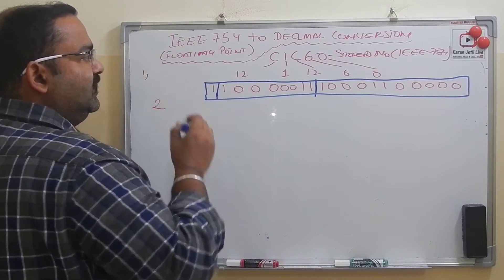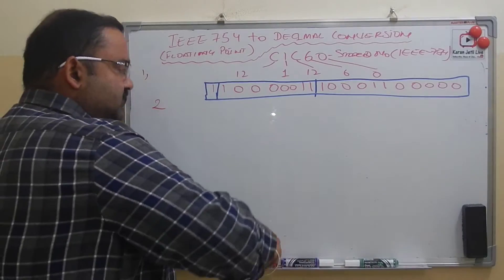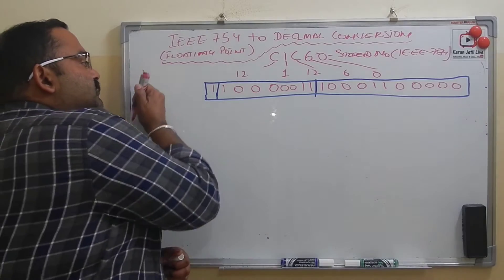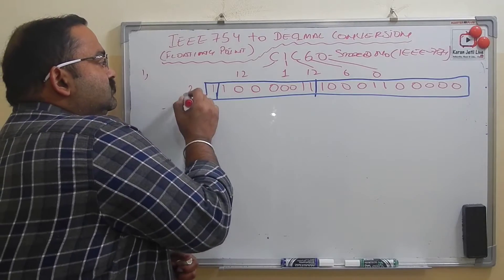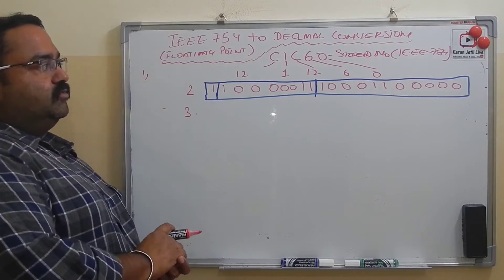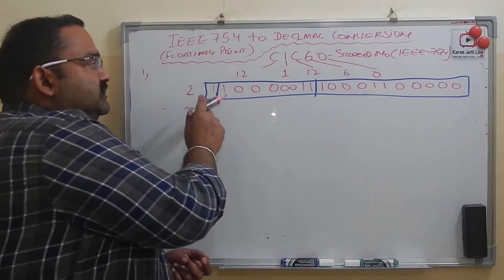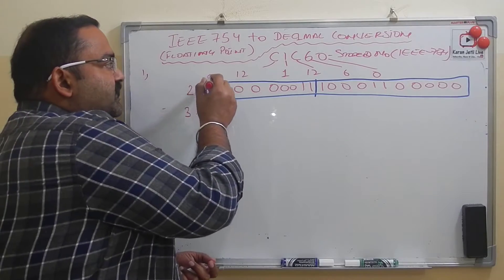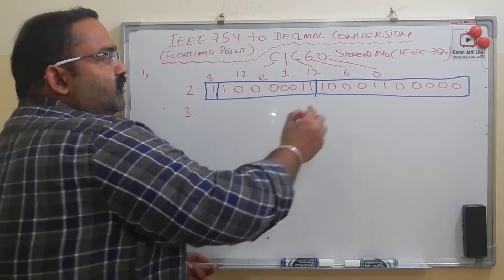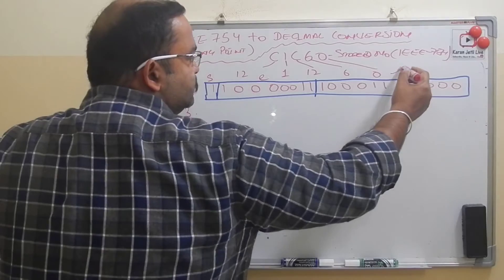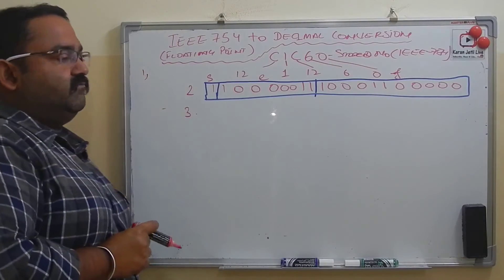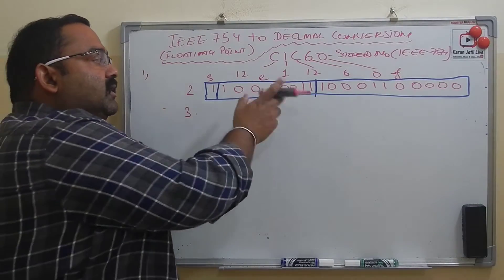Step three: identify the parts. The first group is the sign bit, the second group of eight bits is the exponent, and the remaining twenty-three bits are the fractional part.